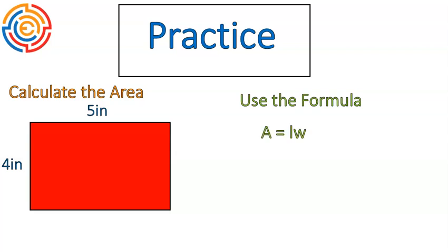Welcome back. The formula is length times width, so we can do five times four, which gives us 20 square inches. That's the area of this rectangle. Now, if instead you did four times five, you would get the same exact answer, and that's okay. With length and width in this equation, you can switch them back and forth — that would be just like turning the rectangle from side to side.